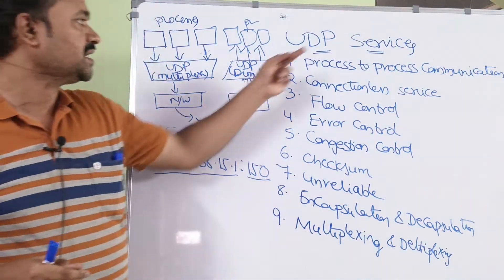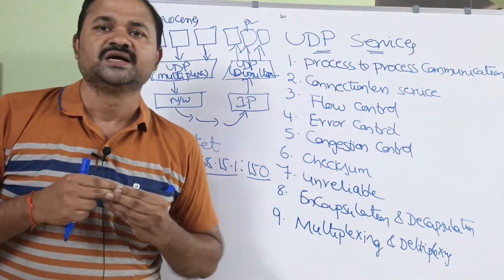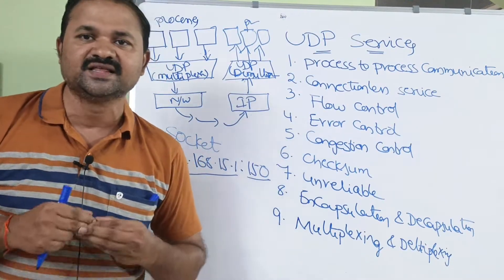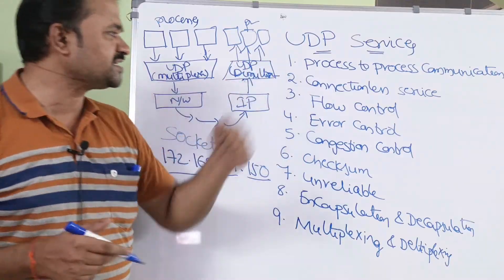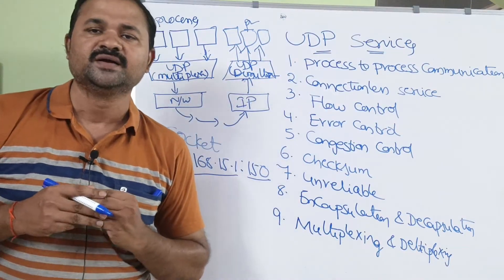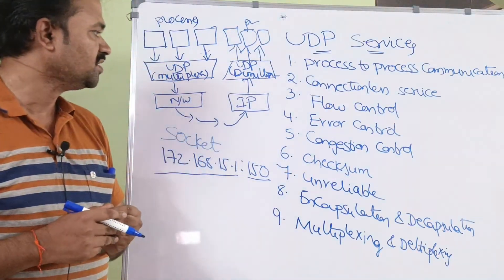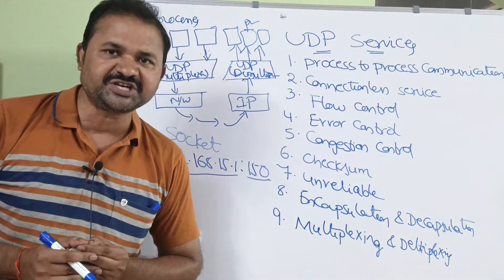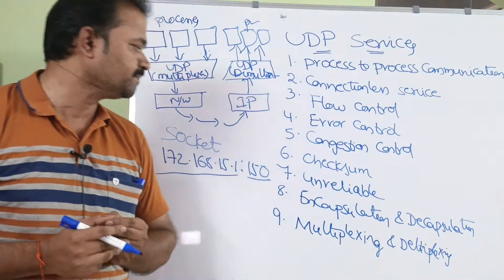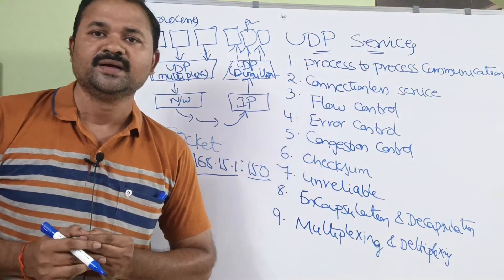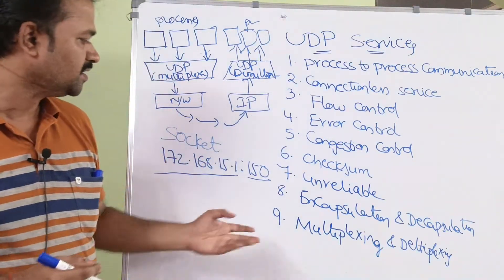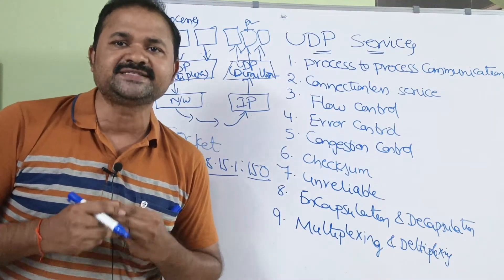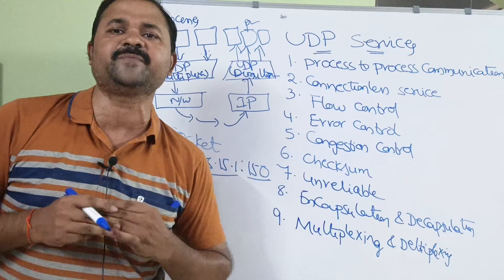Let us discuss about UDP services. UDP mainly provides nine services: process-to-process communication, connectionless service, flow control, error control, congestion control, checksum, unreliable, encapsulation and decapsulation, and multiplexing and demultiplexing. Now let us discuss all these services one by one.